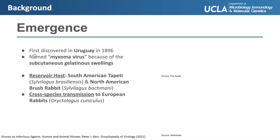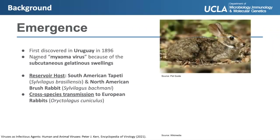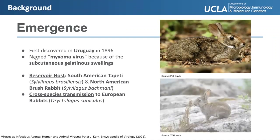Looking at the pictures on the right, you'll see the reservoir hosts on the top and the primary hosts on the bottom. The reservoir hosts for myxoma virus are the South American tapete and the North American brush rabbit, which share the same genus. The primary host, which came via cross-species transmission, is the European rabbit.